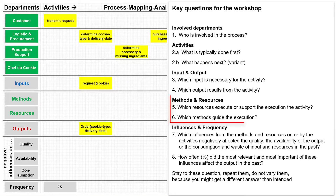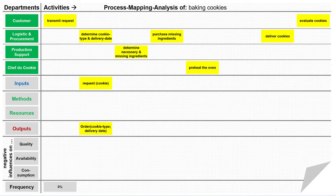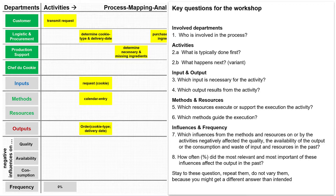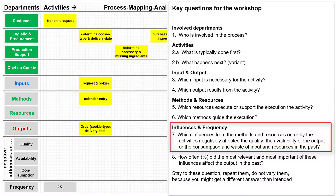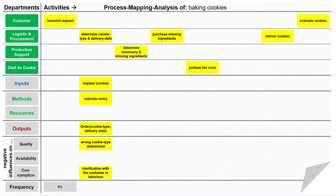Now I ask participants two questions about the methods and resources: which resources execute or support the execution of the activity, and which methods guide the execution? The method for the focused activity is a simple calendar entry; the resources are Laura in her role as logistics and procurement, a calendar, and a pencil. I only enter these trivially given resources if they are a source of a negative influence. The next question is: which influences from the methods and resources negatively affected the quality and availability of the output, or the consumption and waste of input and resources in the past? The answer is that very seldom the wrong cookie type was determined, and that sometimes laborious clarifications with the customer were necessary.